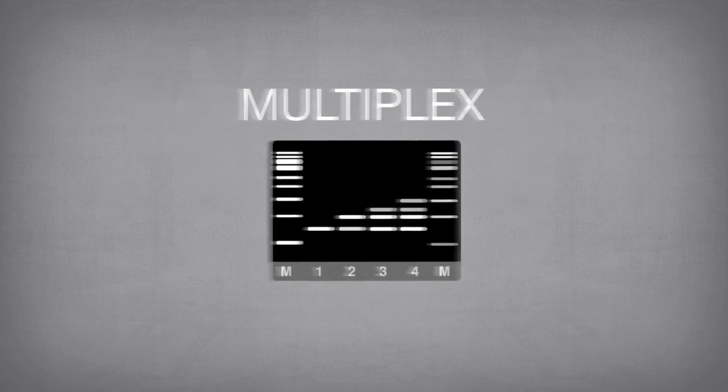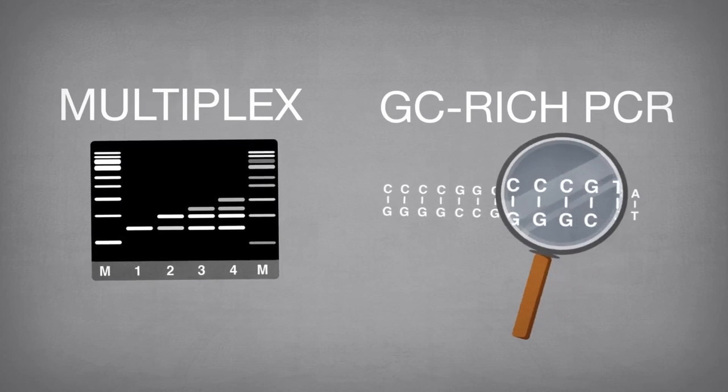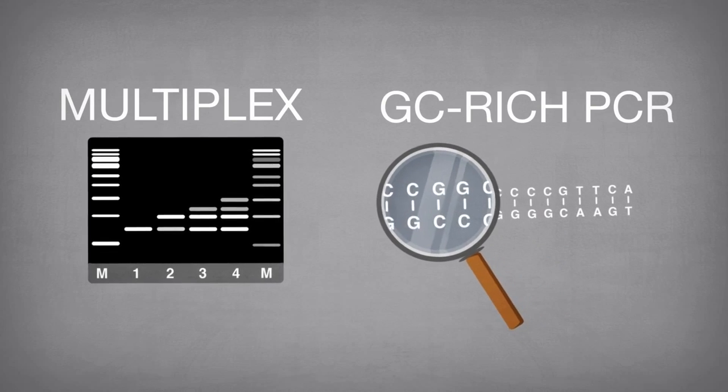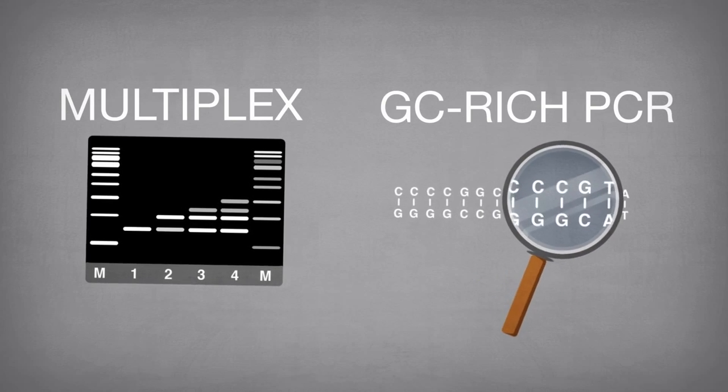GC-rich PCR can be performed with specific reagents developed to handle templates with high GC content, which are harder to amplify in general.